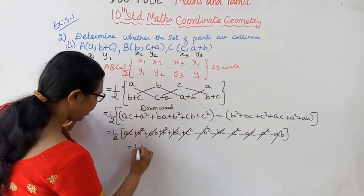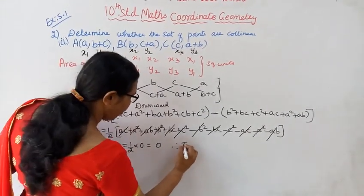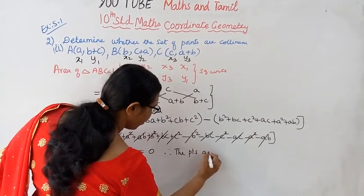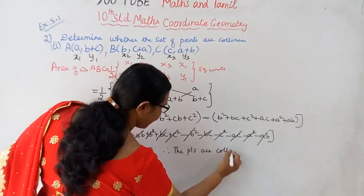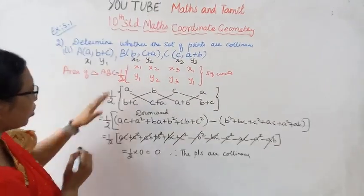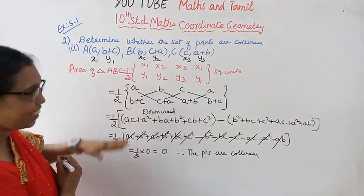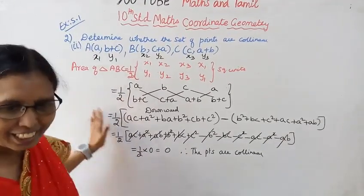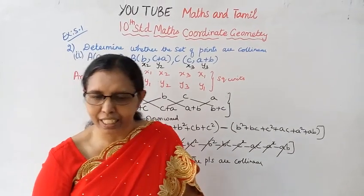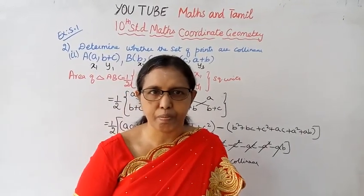Cancel — half into zero — that is equal to zero. Therefore the points are collinear. This method is easy. Okay students, this channel helps you to get 100 marks. Please like, subscribe, and press the link to explore more videos on the channel.